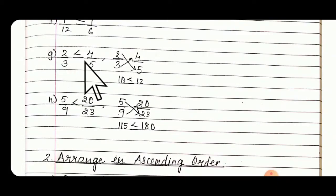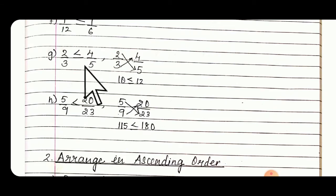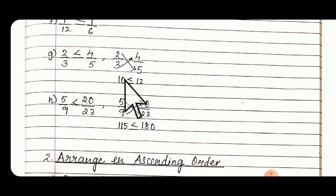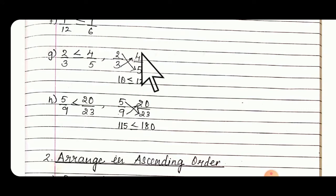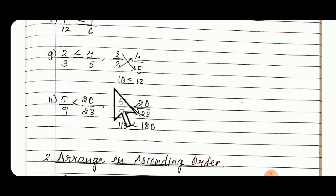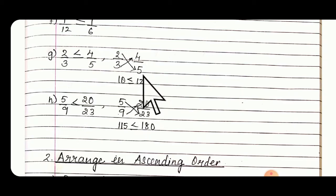Next: 2/3 vs 4/5. At that time you have to do cross multiplication and find which has the greater part. 2/3 and 4/5 cross multiply: 2 × 5 = 10, and 3 × 4 = 12. So which is the bigger one? 12. So use the greater symbol.